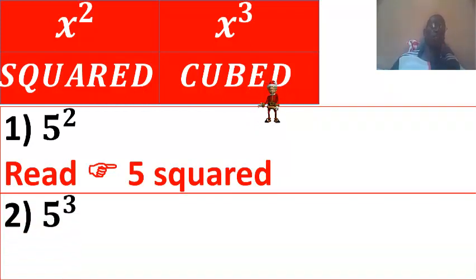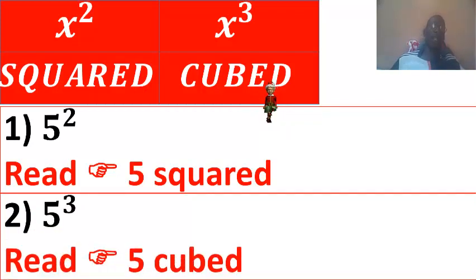5 cubed, you say 5 to the cube, 5 cubed. So, 2 is squared, 3 is cubed.